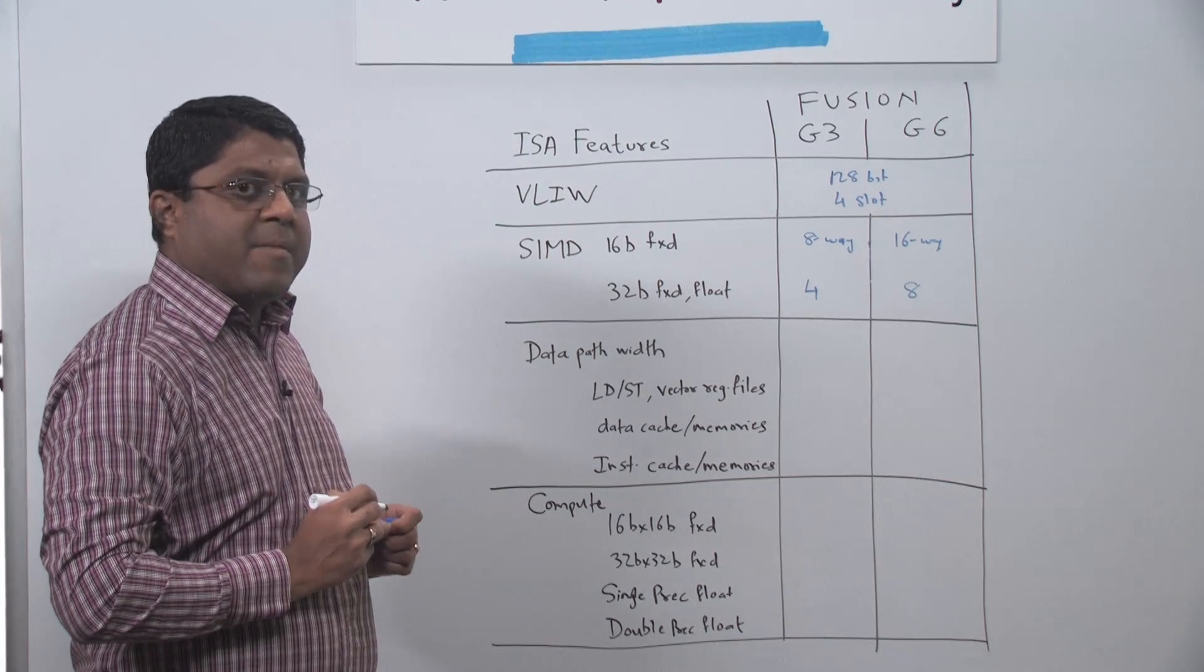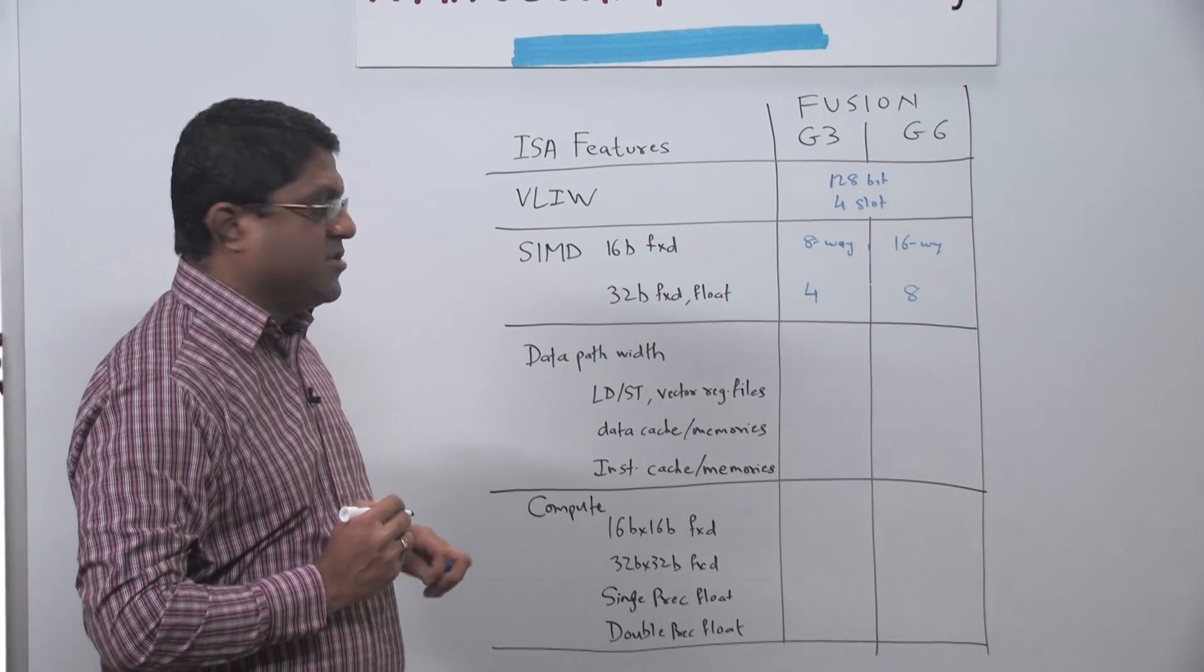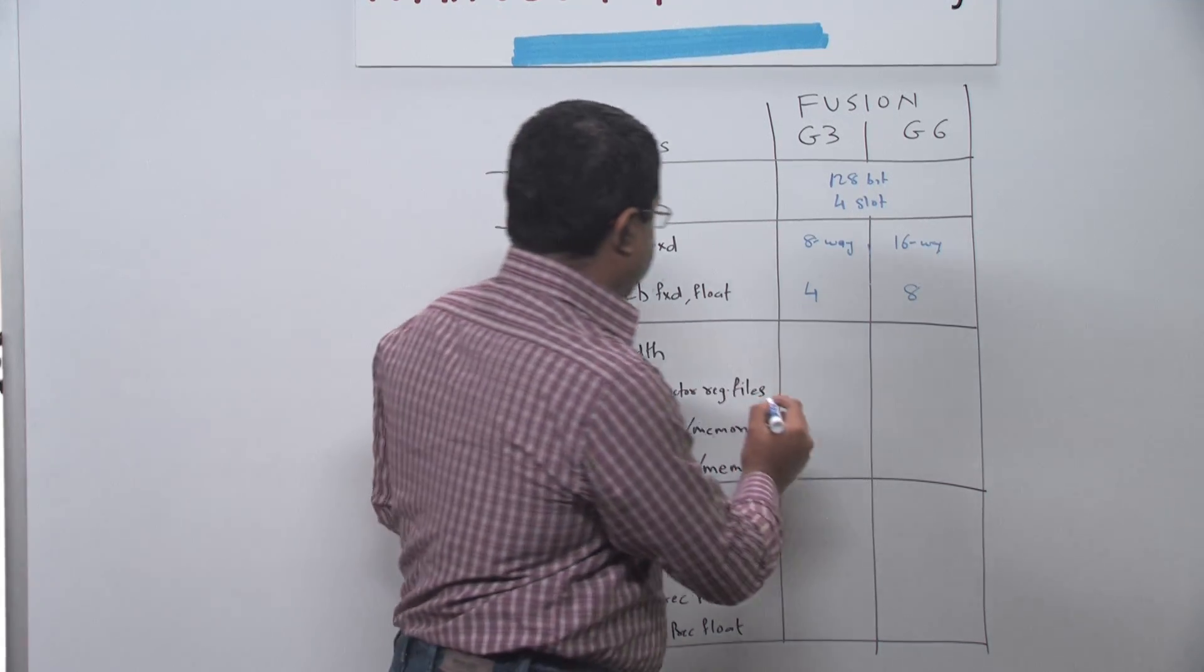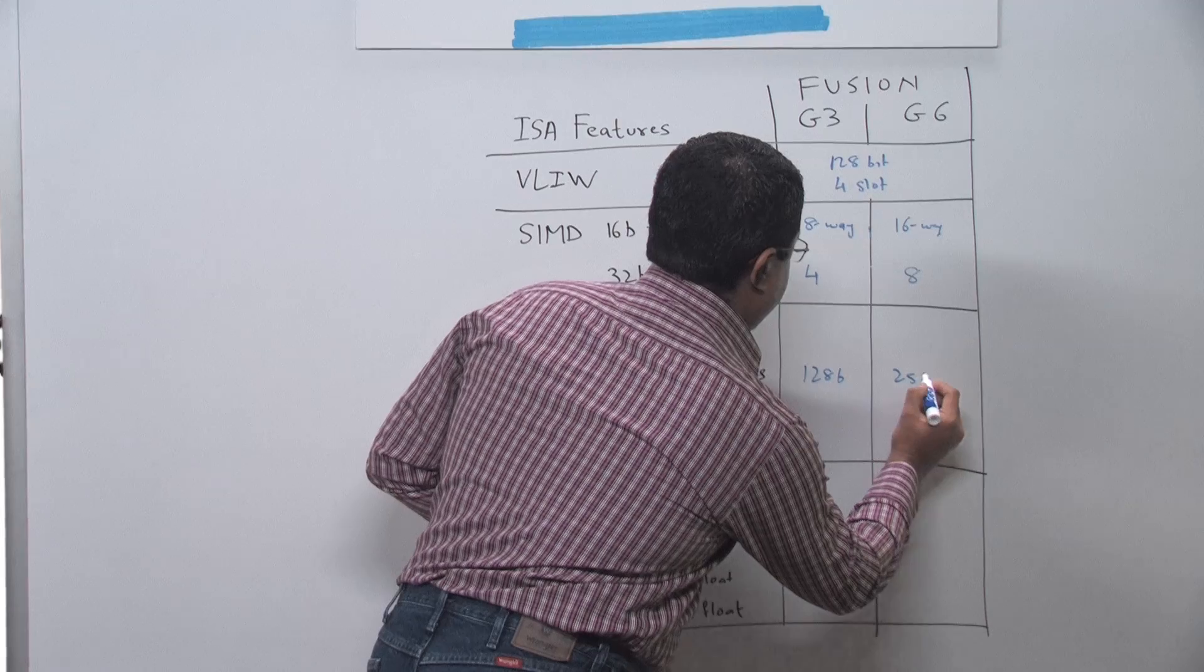In terms of the data path widths, the load store unit and the vector register files width for the G3 is 128-bit, 256-bit for the G6.